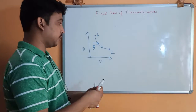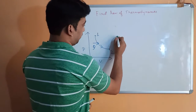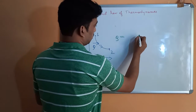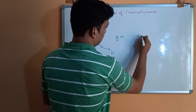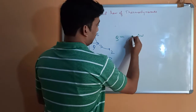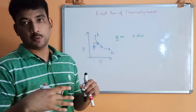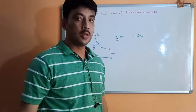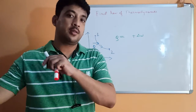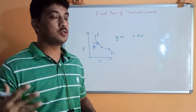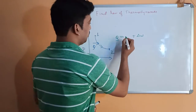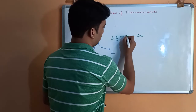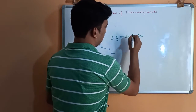Whatever heat transfer we have applied will cause some work done, and the rest — as heat cannot be completely converted into work — there must be some other kind of change, and that change is in terms of the change in internal energy. So DQ is equal to DU plus DW. The amount of heat transferred into the system is divided into two parts: one part is converted into work, and the rest is stored in the system as internal energy.